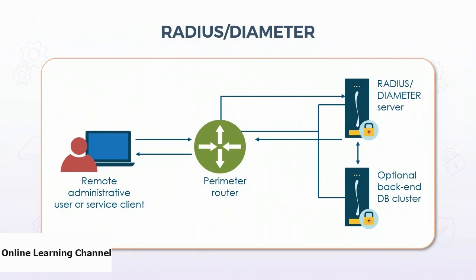The RADIUS server may or may not have the actual user database on it — it could be a front-end/back-end scenario with a cluster of RADIUS servers and an optional back-end database cluster or Active Directory domain controllers. In a 802.1x environment using RADIUS, the remote user is called a supplicant and the perimeter router is called a NAD — a network access device. The NAD could be a switch, router, firewall, or wireless access point.